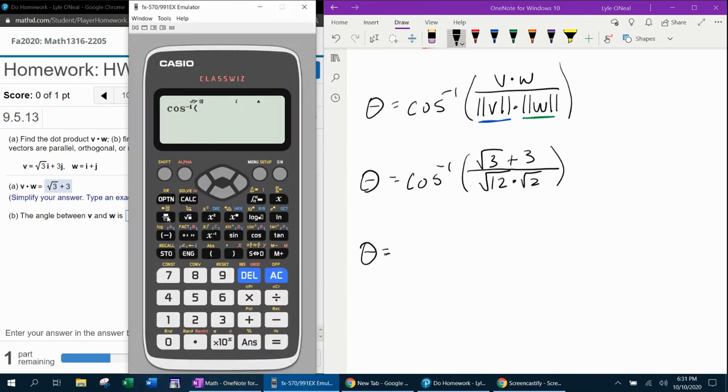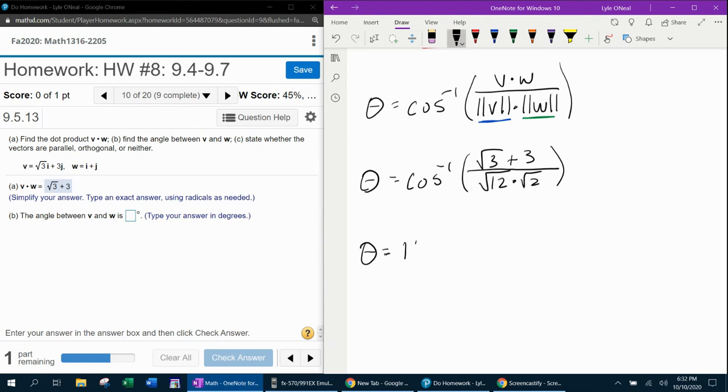Inverse cosine of √3 plus 3—that's the numerator. In the denominator, we have √12 times √2. Close that off, that looks good. Oh, look at that, it's a whole number! The angle is 15 degrees.